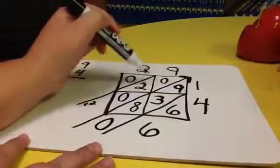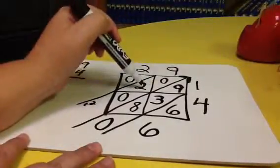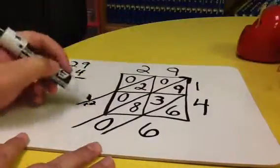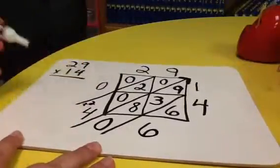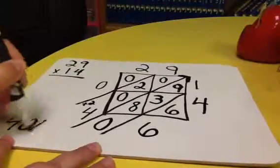0 plus 2 is 2, and then 2 plus 0 is 2, and then we're going to add this other 2 for 4, and then we have a 0 up here. So our answer is going to be 406.